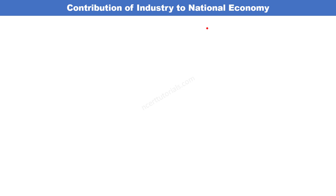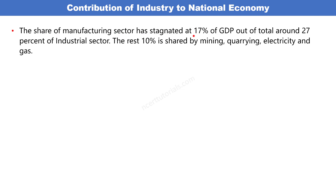Contribution of industry to national economy: the share of manufacturing sector has stagnated at 17% of GDP। Stagnate का मतलब है रुक जाना - जैसे बरसात में गड्ढों में पानी भर जाता है जल्दी सूखता नहीं। Industrial sector का योगदान GDP में लगभग 27% के आसपास है, जो video बनाते समय लगभग 29% के ऊपर जा चुका था। इसमें से manufacturing sector का योगदान 17% के आसपास रहता है।